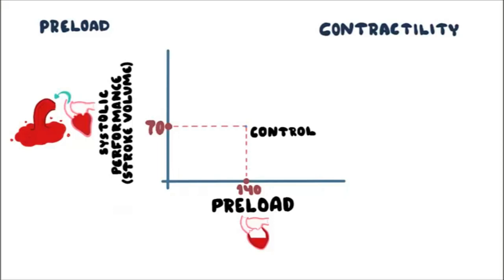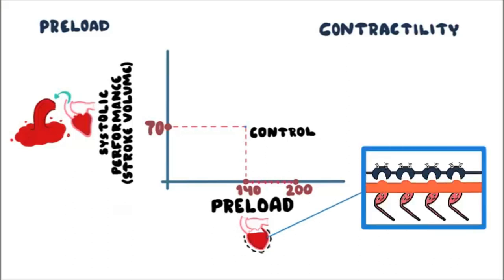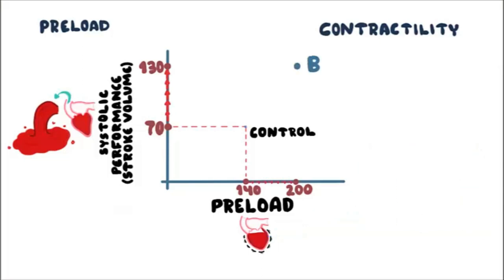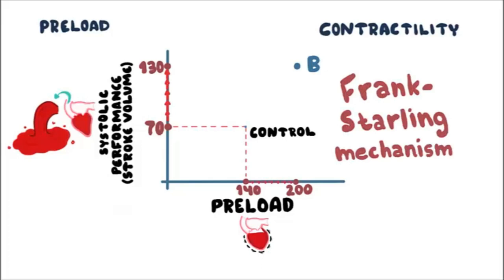If we increase the preload by 60 mL from 140 up to 200 mL, this stretches the ventricular muscle more, more cross-bridges cycle, and we see an increase in force of contraction. As a consequence, the stroke volume increases by 60 mL from 70 mL up to 130 mL. The same amount of blood received by the ventricle will be pumped out. This phenomenon is known as the Frank-Starling mechanism, which attempts to match venous return with cardiac output.